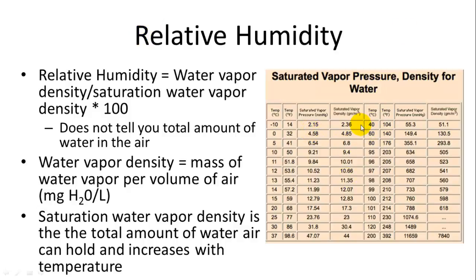So water vapor density tells you exactly how much water is in the air, and that's the mass of water vapor per volume of air. Whereas saturation water vapor density is the total amount of water air can hold, and it increases with temperature. So you have this graph here, and you can see the saturated vapor density at different temperatures, and it increases as the temperature increases. So warmer air can hold more water. So 100% humidity at 10 degrees Celsius is only 9.4 grams per meter cubed. But that may be similar to 5% humidity at 40, okay? Same amount of water, but it's affected by the heat.